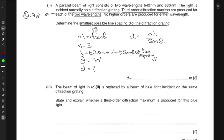So they wanted us to have the smallest possible line spacing. So this would be 3 times 630 into 10 raised to the power minus 9 divided by sin of 90, which is just 1. So this gives me D as 1.9 into 10 raised to the power minus 6 meters or 1.9 micrometers. So D is 1.9 into 10 raised to the power minus 6 meters.